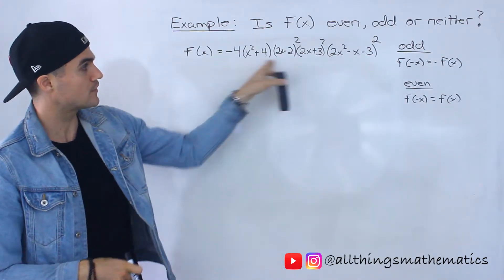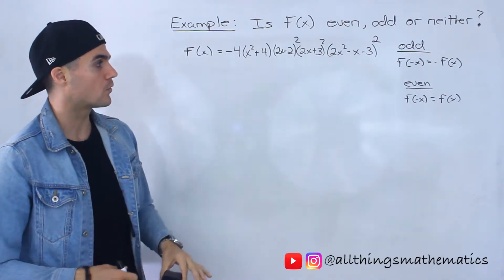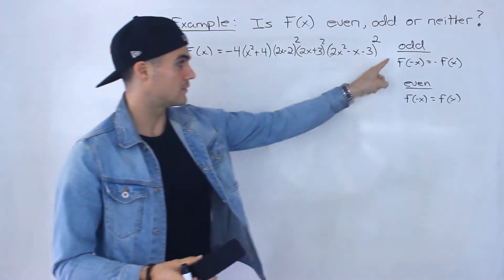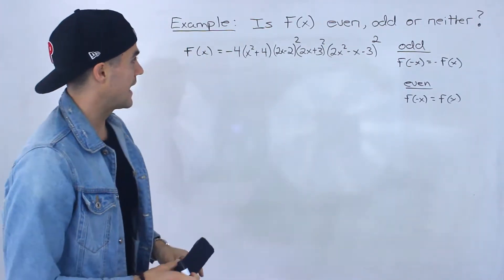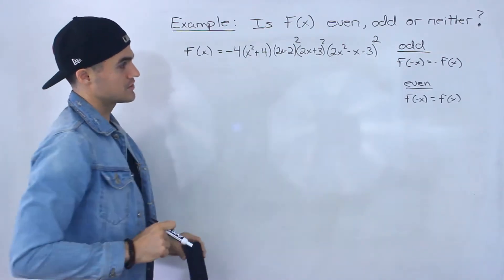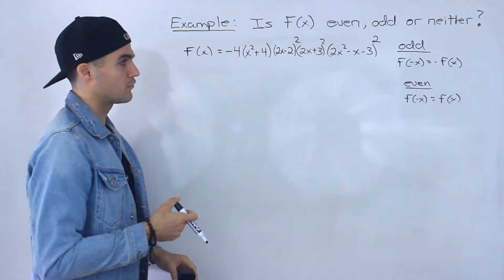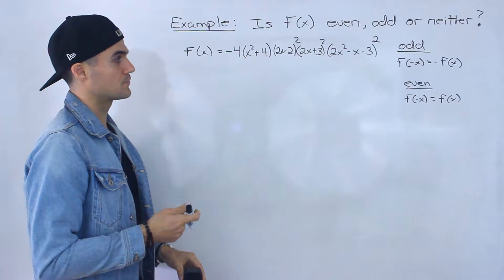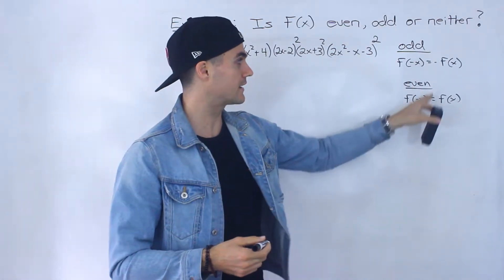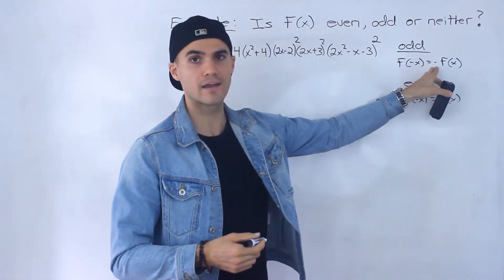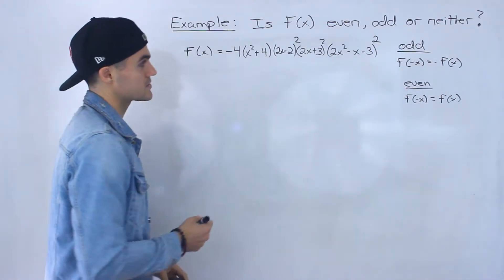So we got this crazy function here. Got to figure out is it even, odd, or neither? Got to figure out do any of these expressions hold here. Now this function here is pretty complex, but we're going to follow the exact same steps that we did before. So we got to find an expression for f of negative x, and then an expression for negative f of x, and then see if any of those equalities hold.